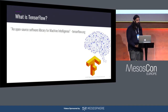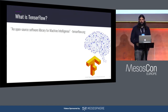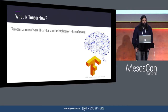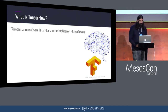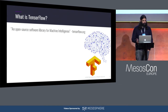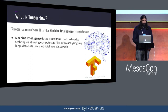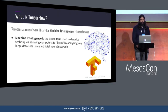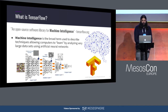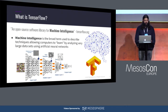I want to start with a quick intro to TensorFlow for those who don't know. TensorFlow.org describes it as an open source software library for machine intelligence. Machine intelligence is a broad term used to describe techniques that allow computers to learn by analyzing very large datasets using artificial neural networks. This is a representation of one of these neural networks that you might build to do this kind of analysis.